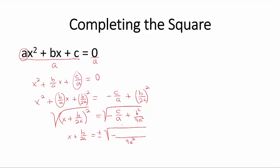And we get 4ac plus b². We have that x is equal to -b/2a plus or minus the square root.